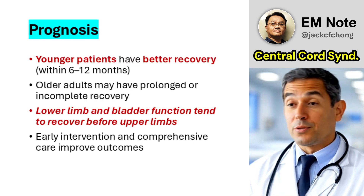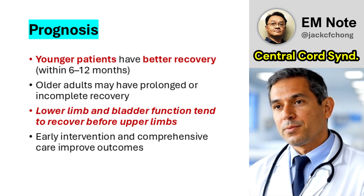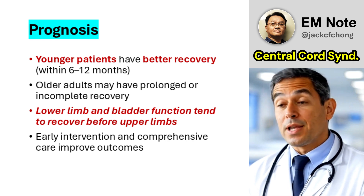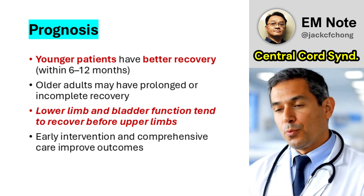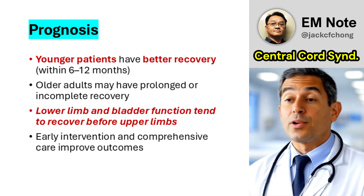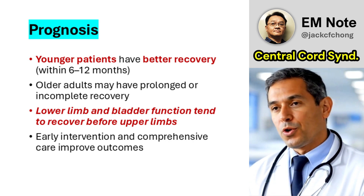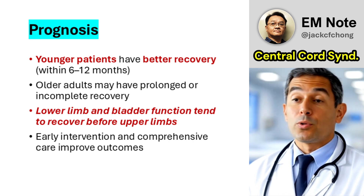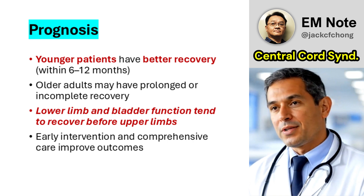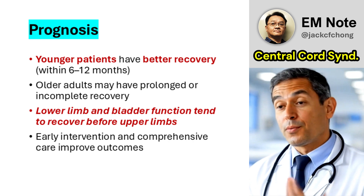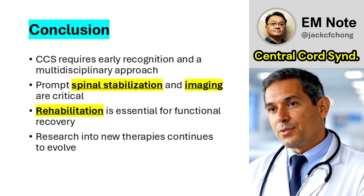Recovery varies by age and injury severity. Younger patients often achieve near-complete functional recovery within 6 to 12 months, while older adults may experience prolonged or incomplete rehabilitation. Bladder function and lower limb strength typically improve first, with upper limb deficits persisting.